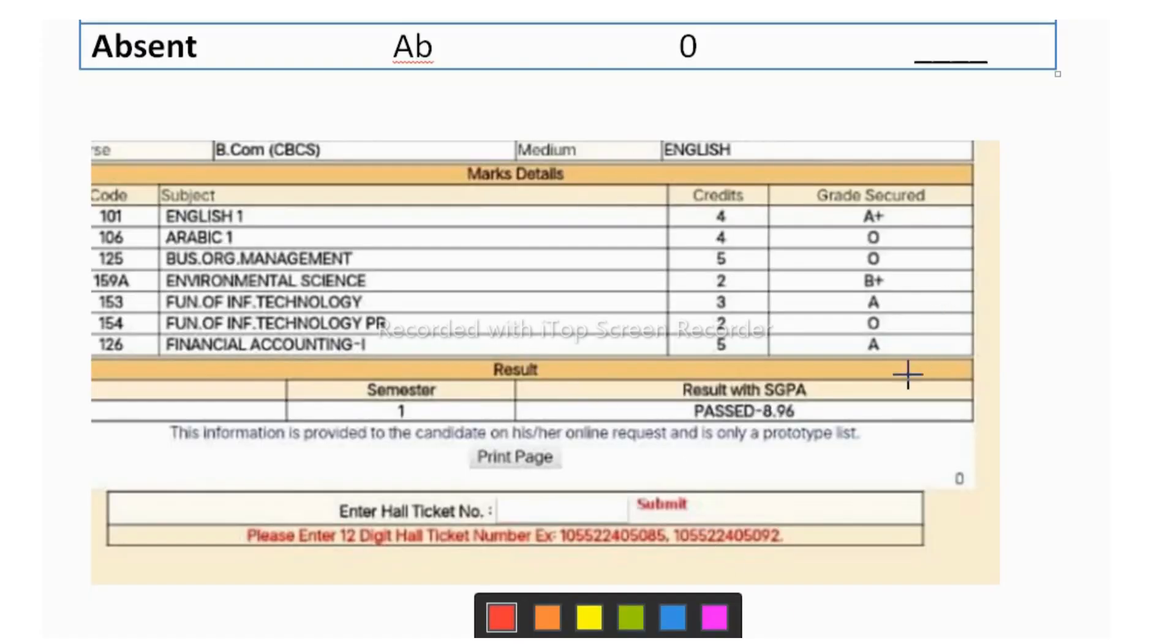Now this is a marksheet of one of my students. Let us see how she got this 8.96, how we have to calculate to get the SGPA. So let's start it. These are the credit points which is decided by the university. Now let's see this one grade score. She scored A plus in English. A plus is nothing but 9.